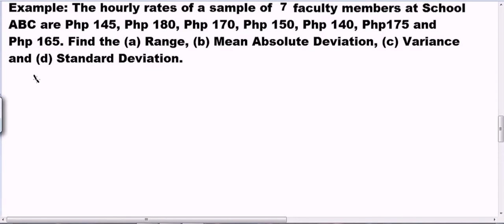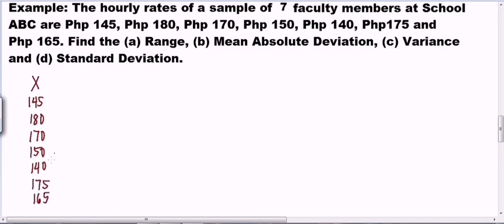The first column is X, which contains the given scores — the data. I have 7 scores: 145, 180, 170, 150, 140, 175, and 165. The next column is the absolute value of X minus mean, and the last column is the absolute value of X minus mean, squared.